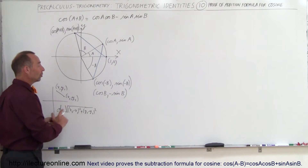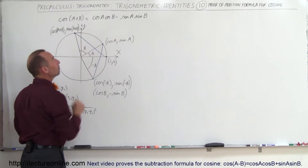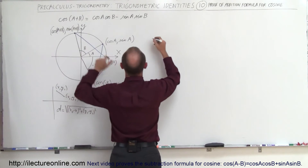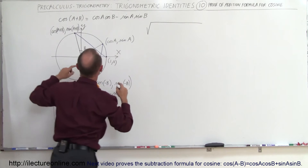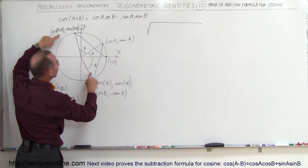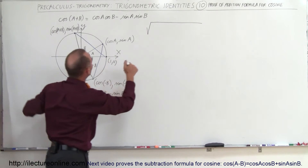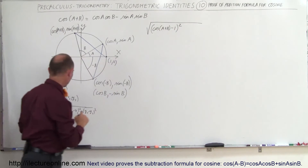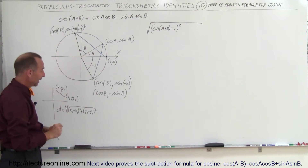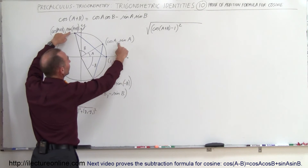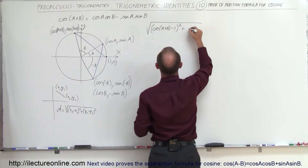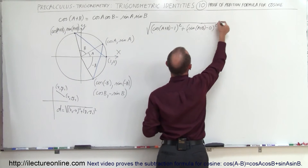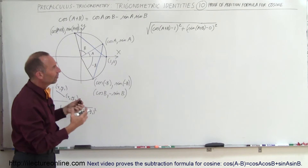Let's find the distance of the first chord. The length of line 1 equals the square root of the difference in x-values squared plus the difference in y-values squared. The x-values are cosine of A plus B and 1, so we get cosine of A plus B minus 1, quantity squared. The y-values are sine of A plus B and 0, giving us plus sine of A plus B minus 0, quantity squared.